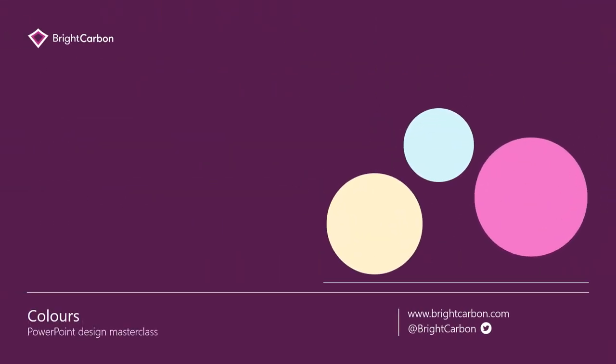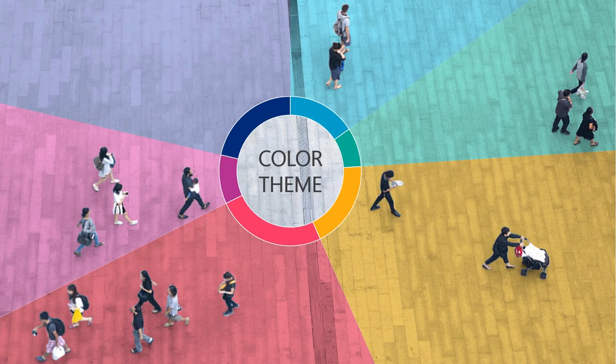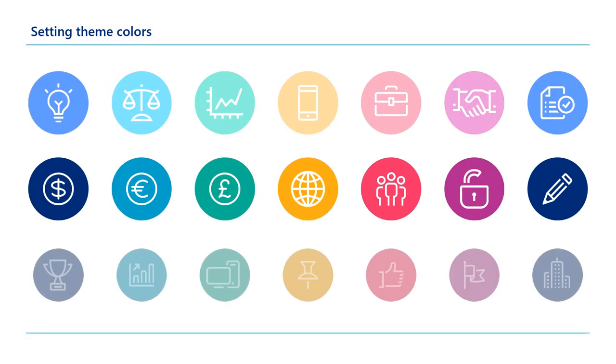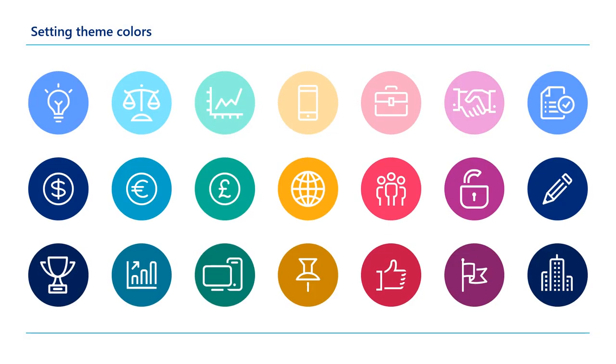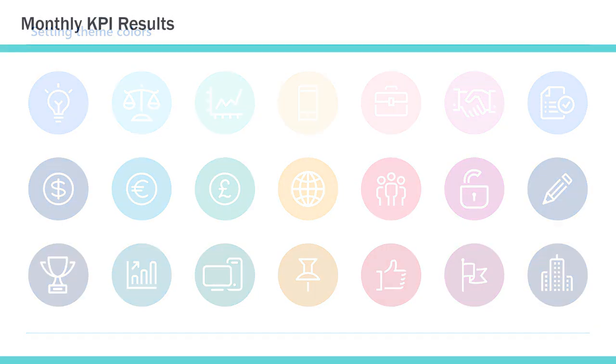Another key presentation design principle is color. Setting the right color palette is essential, as it gives everything a consistent feel and allows you to adhere to your brand. The best way to handle colors in PowerPoint is to set your template correctly and use a color theme. You can find out how to change your PowerPoint color theme using the link below — it's really quick and easy to do, and once you've done it, it saves with the file or template.